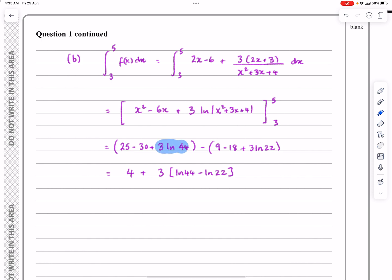Just stop and see what I've done there. This isn't my first time doing one of these sorts of questions. And quite often when they're doing the log parts, it'll be the same multiplier, in this case 3 on both of them. So I can take 3 out as a factor, purely so I can then write this as 4 plus 3 times log 44 minus log 22, which is log 44 over 22, which is then 4 plus 3 log 2.